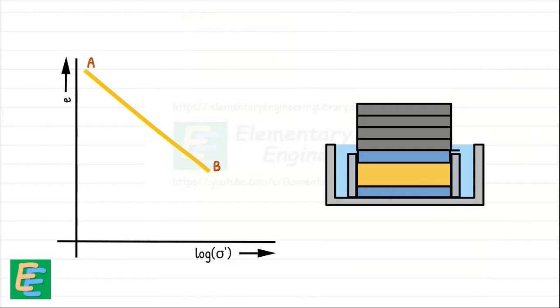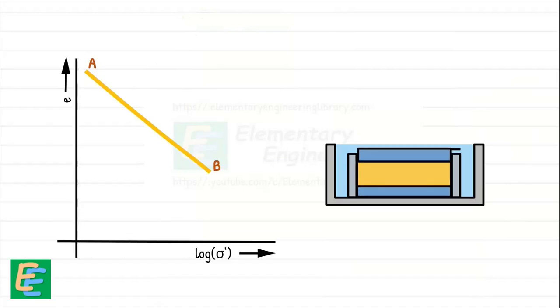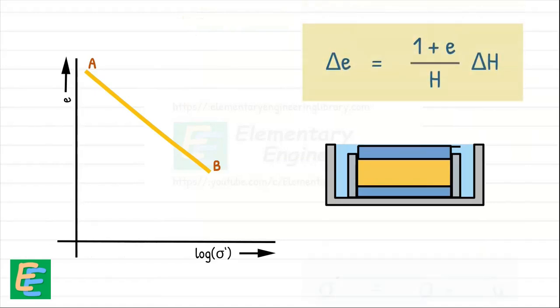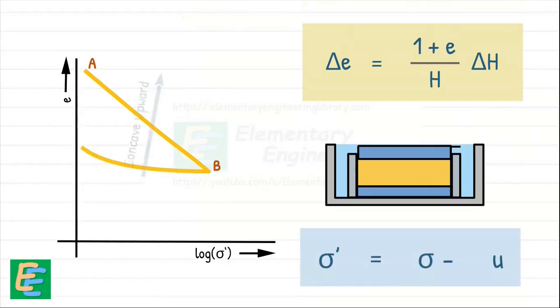We did not plot the portion of the curve when the soil was unloaded. So when the sample reaches equilibrium under the final load at point B, which represents the maximum stress applied during the test, we remove the load from the sample and allow it to swell under unloaded conditions. After allowing the soil sample to swell and measuring the corresponding void ratio and effective stress, a curve is obtained that is concave upwards.